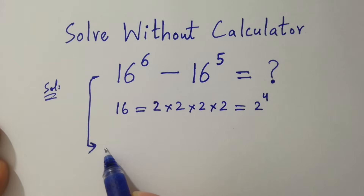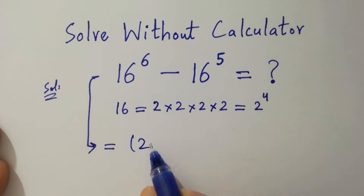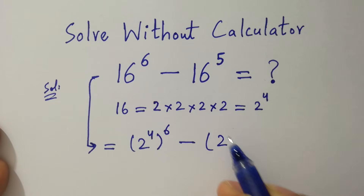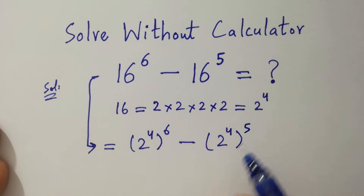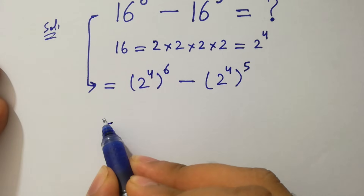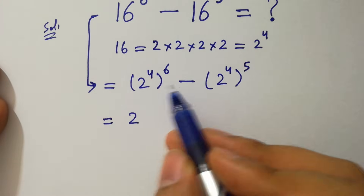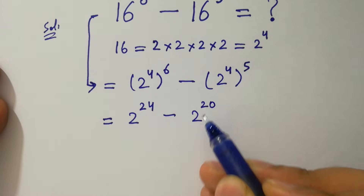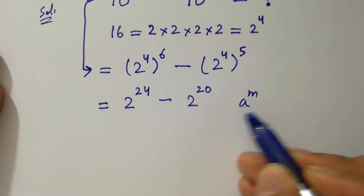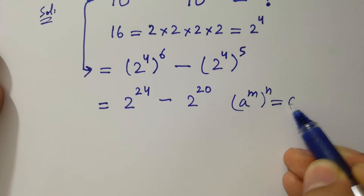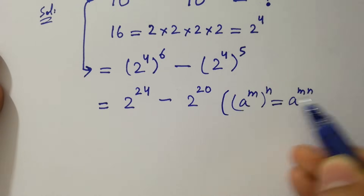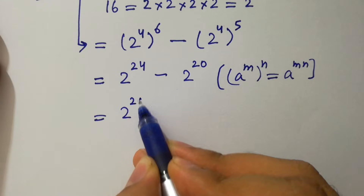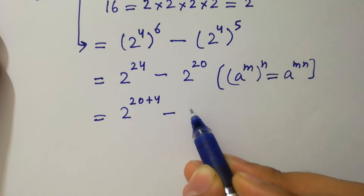Then it can be written as (2 to the power 4) to the whole power 6, minus (2 to the power 4) to the whole power 5. This gives 2 to the power 24 minus 2 to the power 20, since a to the power m to the whole power n equals a to the power m times n. This is the same as 2 to the power (20 plus 4) minus 2 to the power 20.